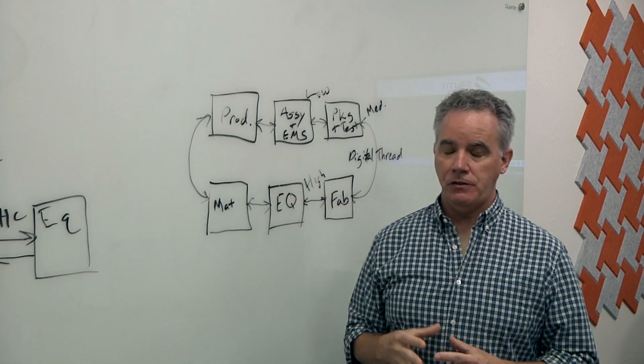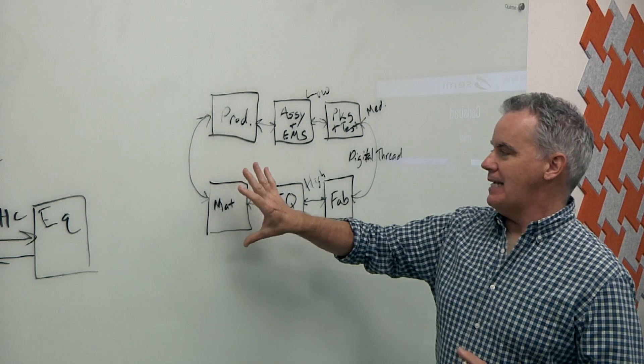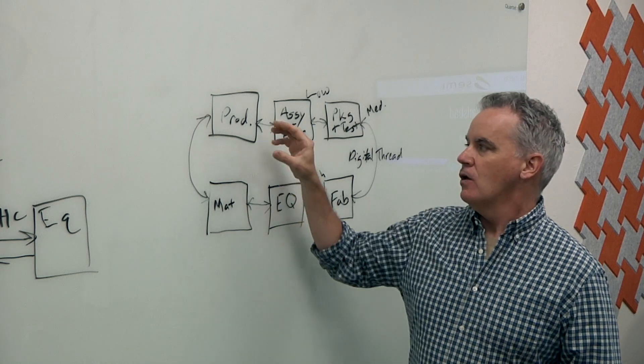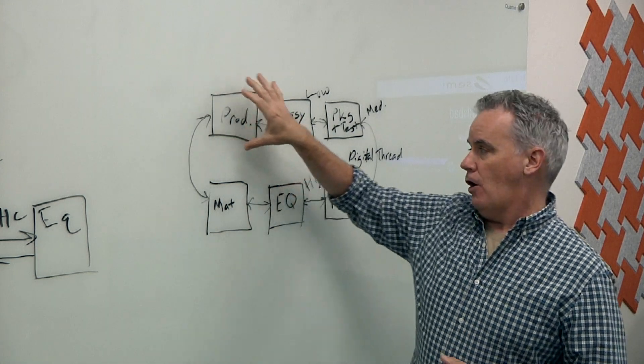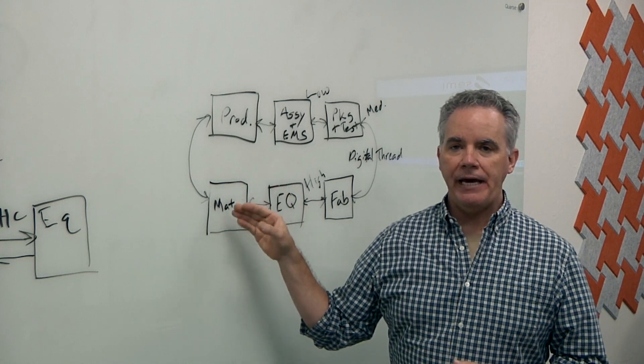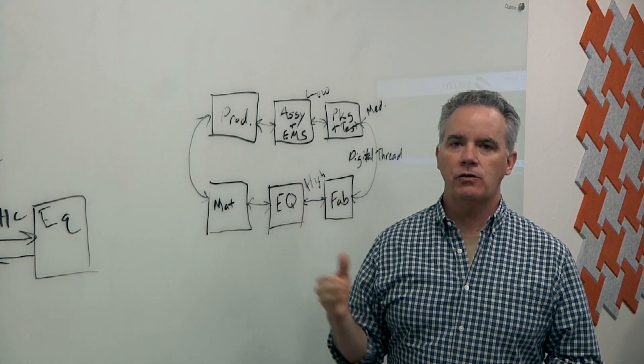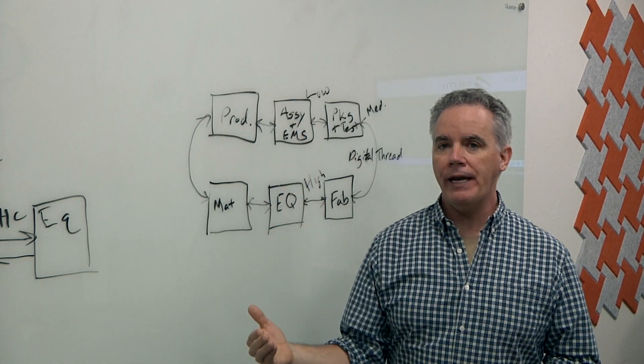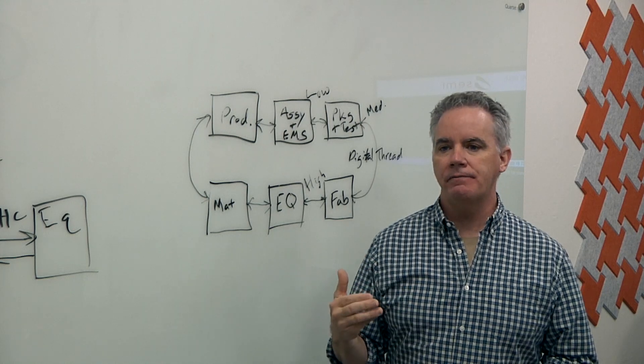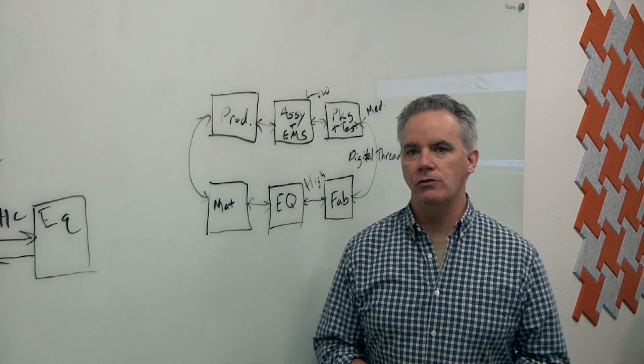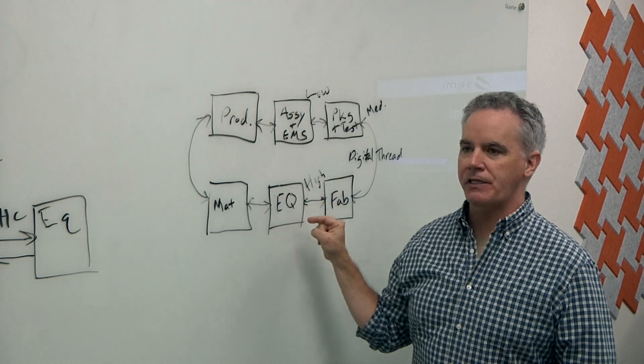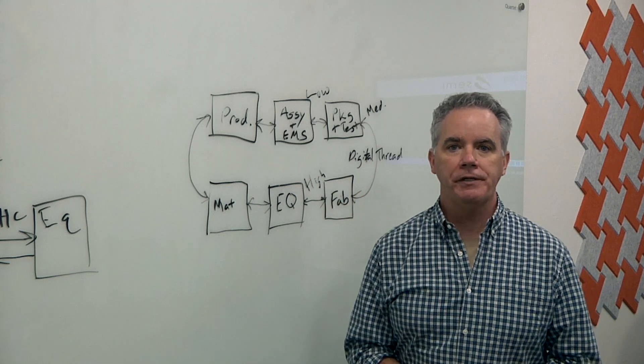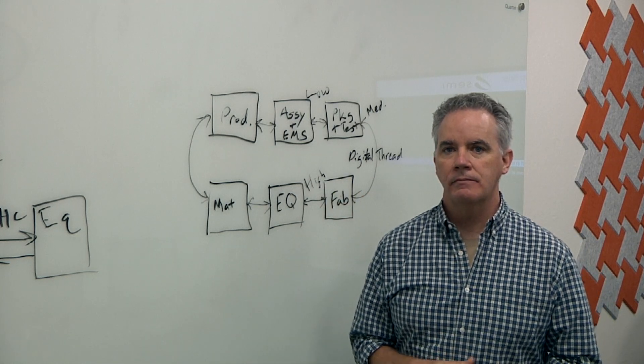The time to market pressures, the product cycle pressures are such that the product companies all the way down through the supply chain need to get information in situ in the process quicker so that they can make adjustments, whether that's for a new design, a new product, or to resolve any reliability issues or defect issues. The challenge really is to get the right information from the right constituents at the right time to resolve those issues quicker.